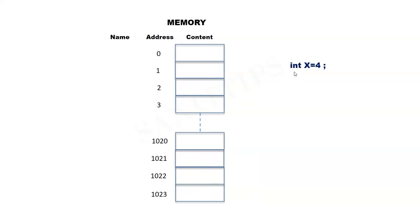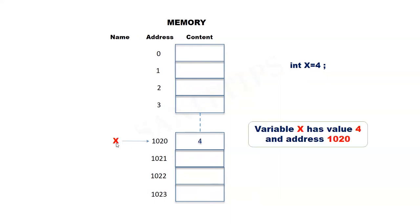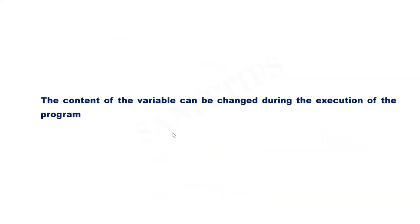Let us examine the statement int x equal to 4. When this statement is executed, a memory location is allocated and the name x is associated with the location. The value 4 is then stored in that location. Let us assume that x is linked to memory location 1020. Therefore, we can say that the variable has the name x, address 1020, and value 4. The value assigned to the variable can be changed during execution of the program — that is why we call it a variable.